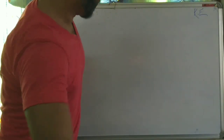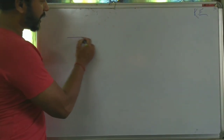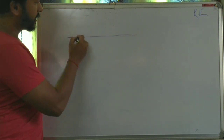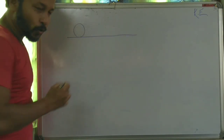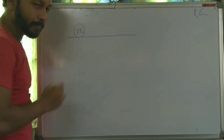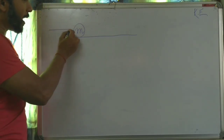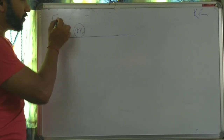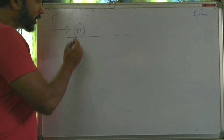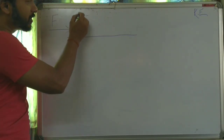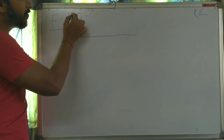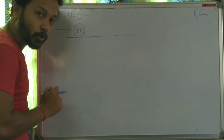Now we will discuss the mathematical explanation of kinetic energy. Say, this is the ball whose mass is M. Now you are applying a force, capital F. What is the initial velocity of the ball? Zero. That is, initial velocity equal to zero.